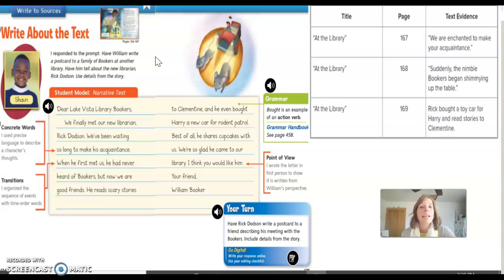Okay, let's look over here at text evidence. I have text evidence over here or some notes that Sean took to include in his student model. It says, we are enchanted to make your acquaintance. When we look at that, we can look at it closely and know that enchanted and acquaintance, those are very concrete, very precise words to describe what the character is saying.